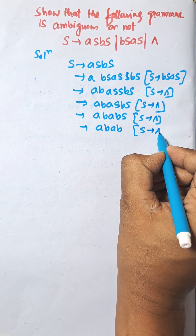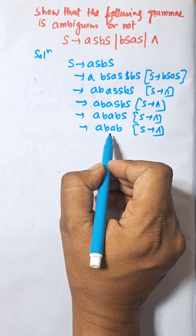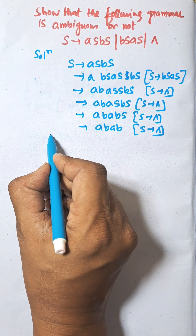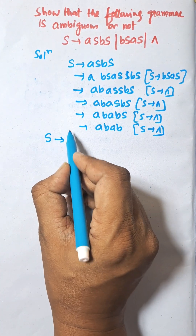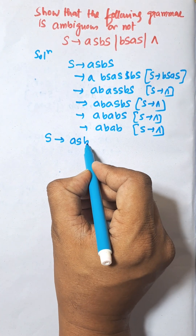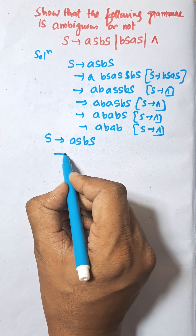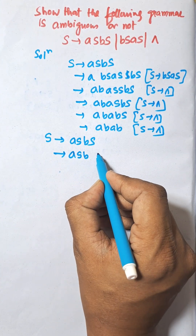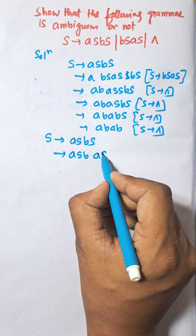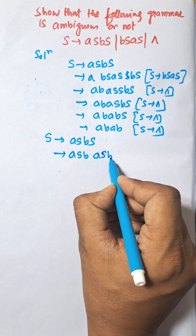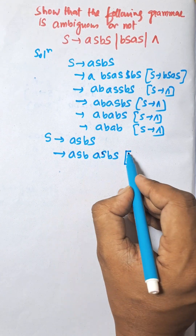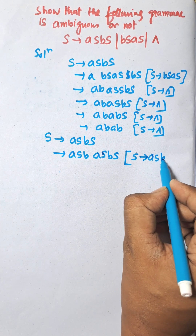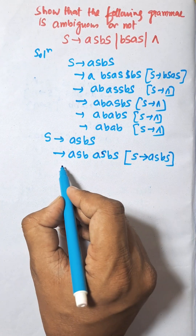So this is the string abab. Now we need to create this same string using the production another way. Let us consider: S → aSbS. Now putting the values of S here: aSb — that is aSbS. I am choosing rightmost derivation here: S → aSbS, now substituting the rightmost S.